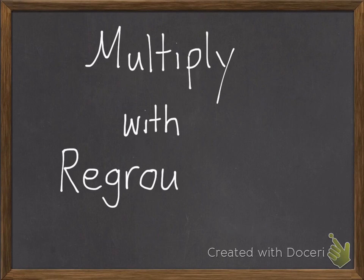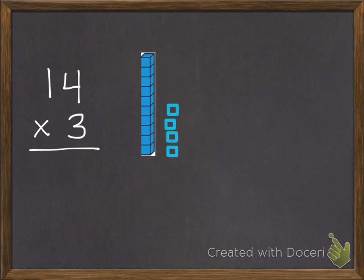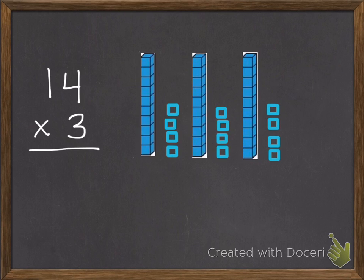Today we're going to multiply with regrouping. I have a problem, like 14 times 3. We know from our past lessons we can use models to help us. So I could use place value blocks to make three 14's. There's one 14, two 14's, three 14's.